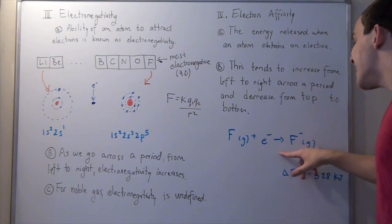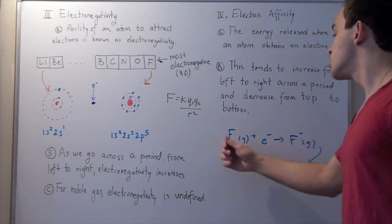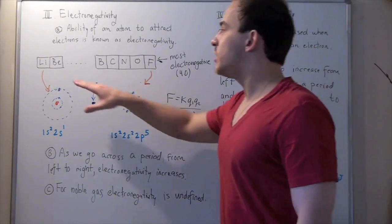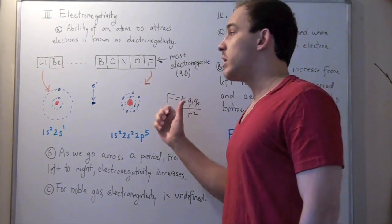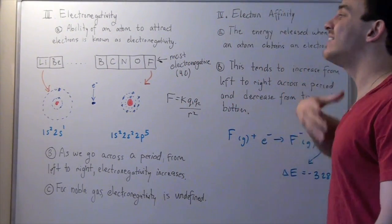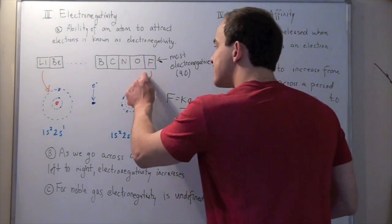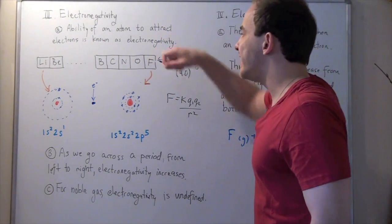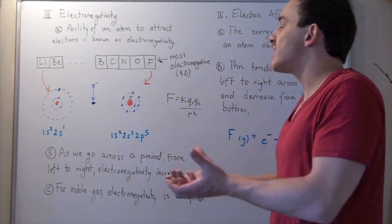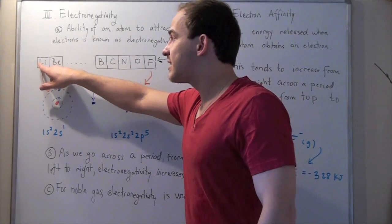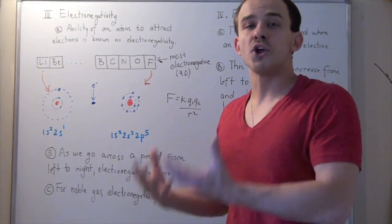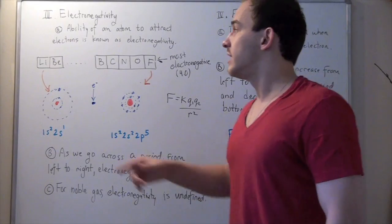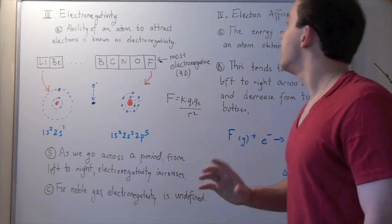Therefore, the fluorine anion is more stable than its neutral counterpart, and this reaction is exothermic. As we go from lithium to beryllium to boron and so on — whenever we go from left to right — our electron affinity increases. This reaction is more exothermic for fluorine than for lithium: whenever fluorine gains electrons, it becomes stable and releases a lot of energy. On the contrary, whenever lithium gains electrons, the reaction is endothermic, because neutral lithium is more stable than the lithium anion (Li⁻). And that's exactly what we mean by electron affinity.